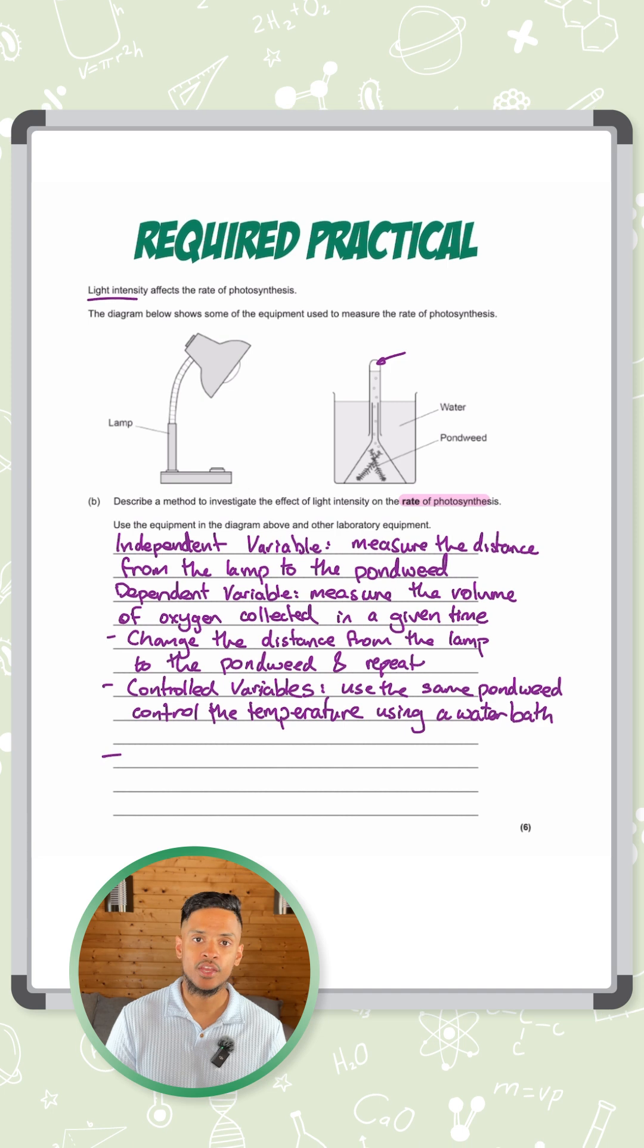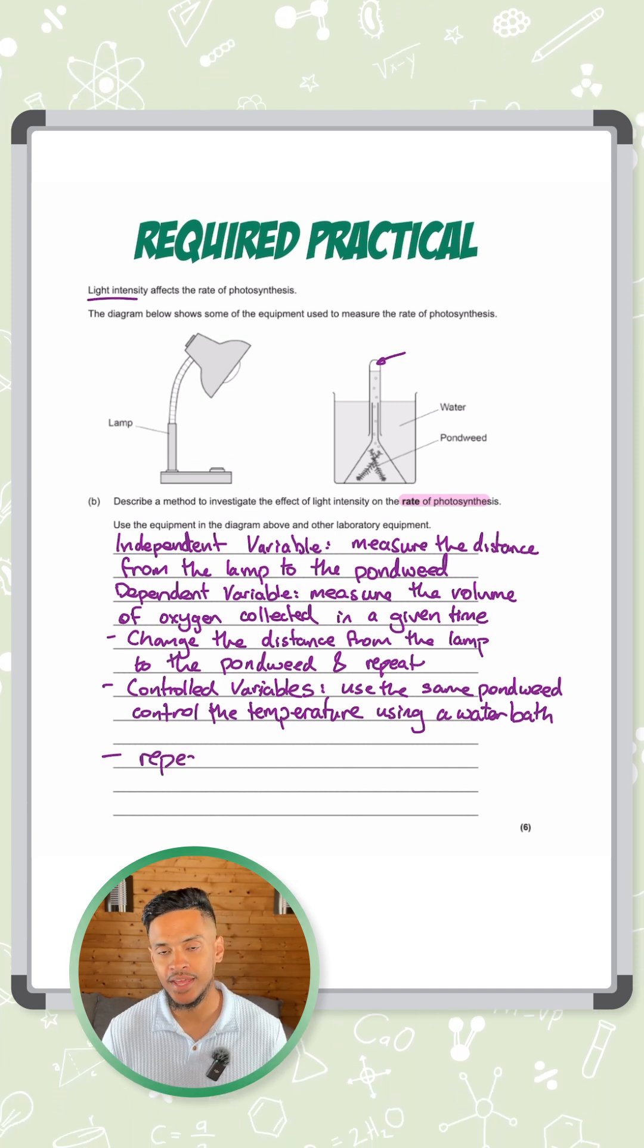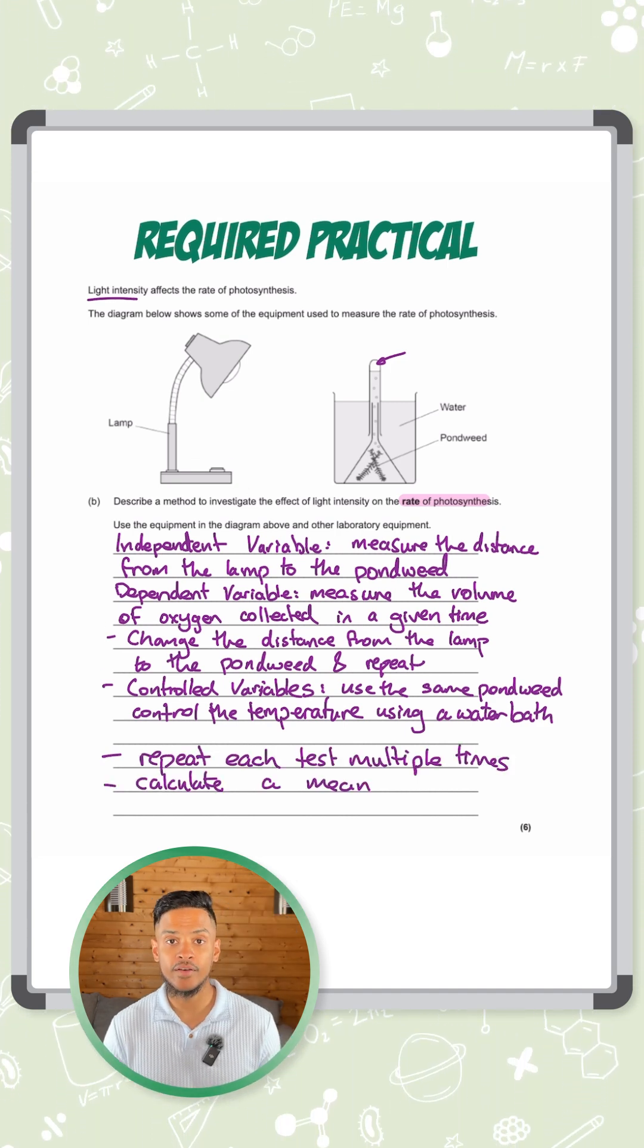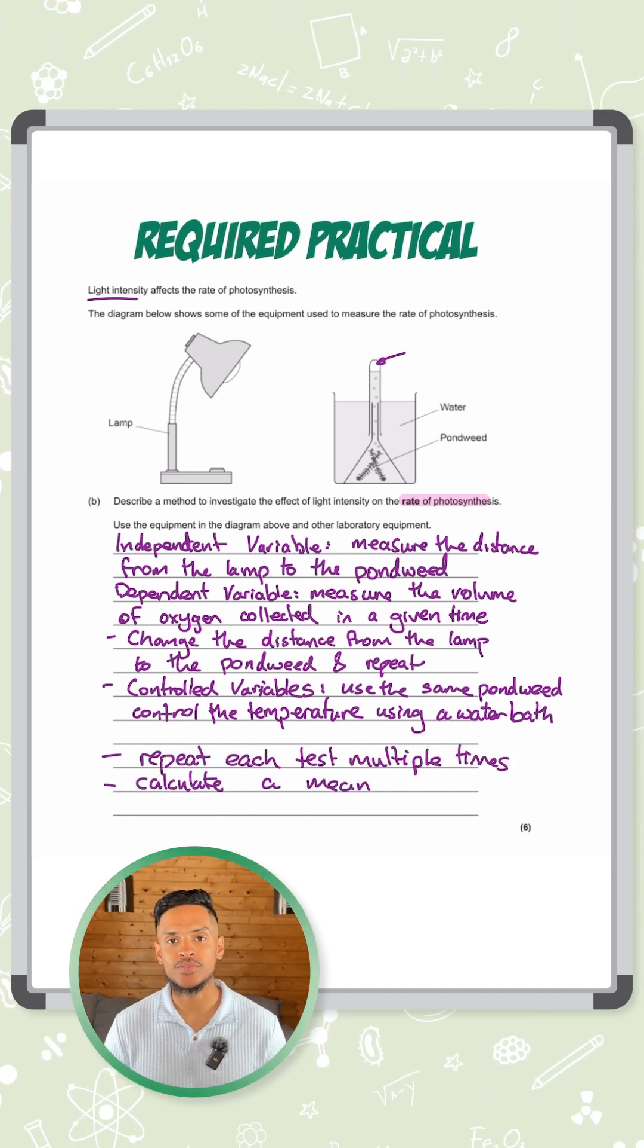Then for accuracy points you can repeat your whole process again and find a mean and what you have there is six marks for that question.